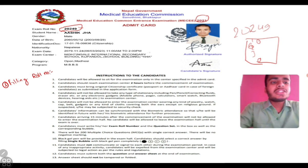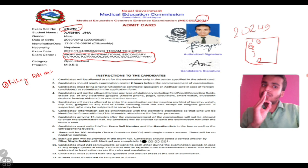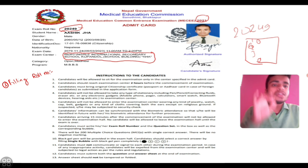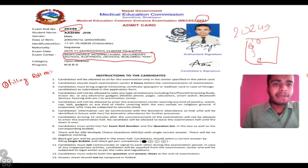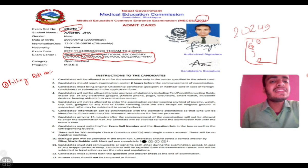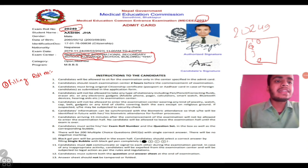The next most important thing is the exam center. The exam center is listed on your admit card — for example, Night Angle International School, Kupandol. Whatever is written on yours, search that exam center on Google. You need to go there yourself. Unless you know the exam center very well, Google it and find the path. Once you have the school name, search its location on Google Maps. You don't need to write the full address — just the name is enough to find the location.